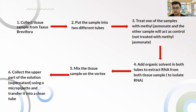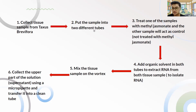For the steps involved, we need to collect tissue samples from Taxus brevifolia. After that, we put the samples into two different tubes. We treat one of them with methyl jasmonate, and the other sample acts as a control, meaning we do not treat it with methyl jasmonate. This way, when we get the results, we can distinguish between those producing taxol and those that are not.